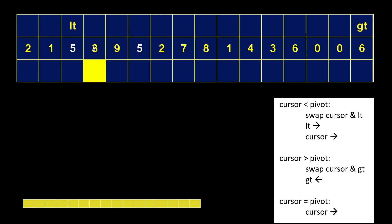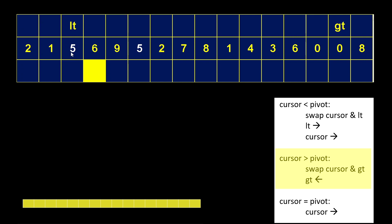Now the cursor is at eight. That brings us into rule two, because the cursor — eight — is bigger than the pivot. So in this case, we're going to swap the cursor not with LT, but with GT, and then move GT to the left. The number at the cursor changed — now we have six, which again is bigger than the pivot, so again that brings us into rule number two. We swap what's at the cursor with what's at GT, and move GT to the left again. Now the number at the cursor is less than the pivot, bringing us to rule number one. So we swap the number at the cursor with the number at LT, move LT to the right, move the cursor to the right.